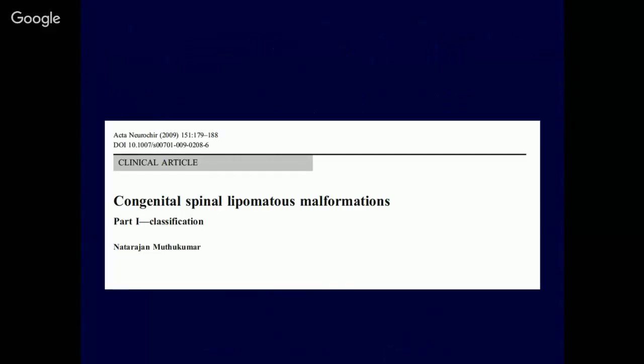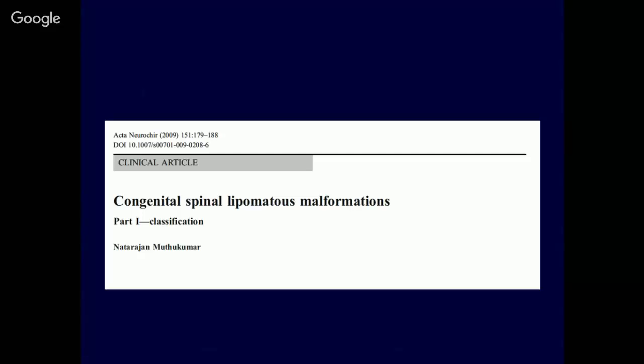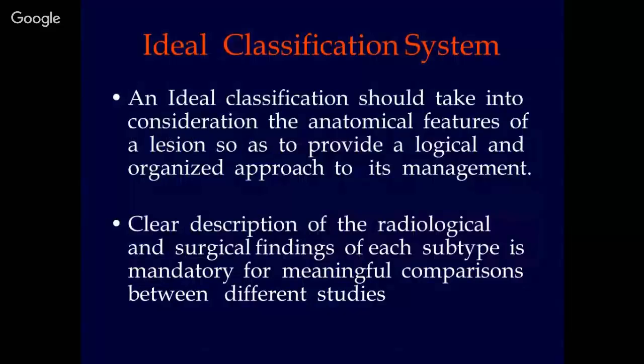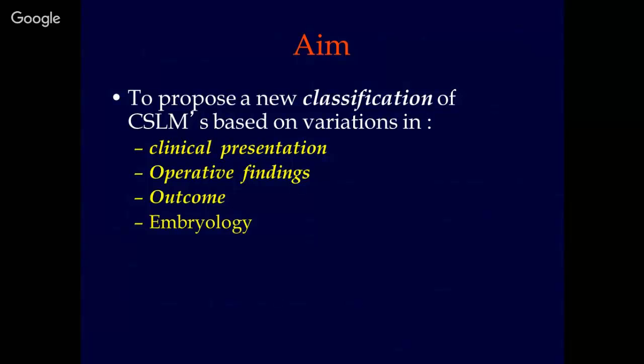We published our classification of spinal lipomatous malformation as a two-part article in Acta Neurochirurgica in 2009. At that time we had 80 patients; now we have added 64 more patients, giving 144 in this presentation. An ideal classification system should take into consideration the anatomical features of the lesion to provide a logical and organized approach to management. There should be clear description of radiological and surgical findings of each subtype, which is mandatory for meaningful comparisons between different studies.